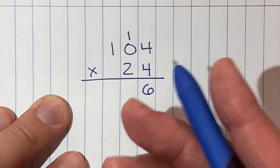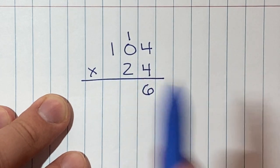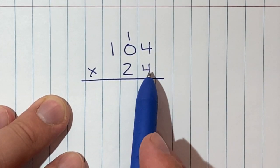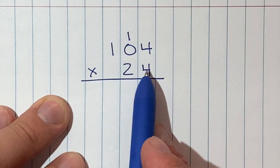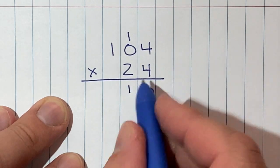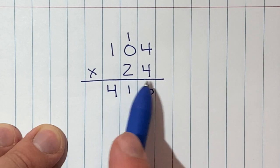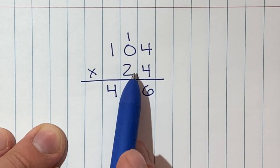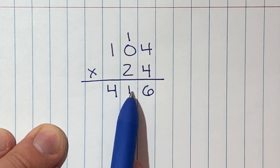So far we did four times four is 16, six went down, one went up. Four times zero, zero plus one is one. And then four times one is four. So our first partial product, 104 times four, our first partial product is 416.